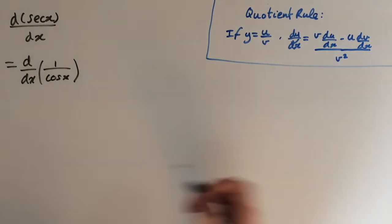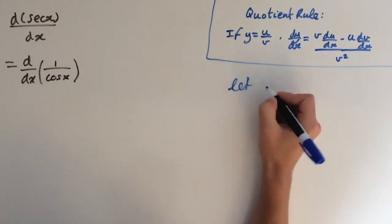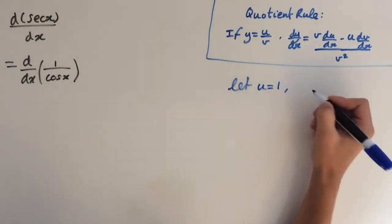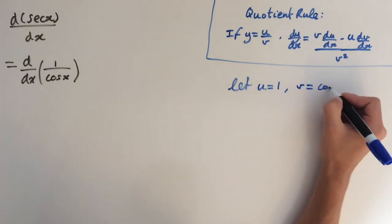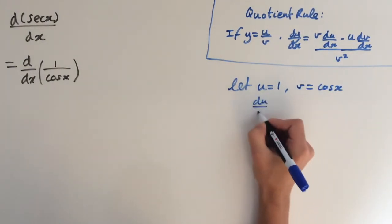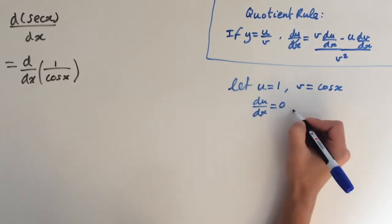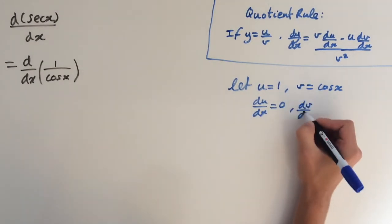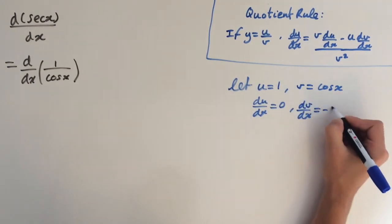Now we want to use the quotient rule. So we're going to let u equal 1 and v equal cosine of x. So du dx equals 0 and dv dx equals minus sine of x.